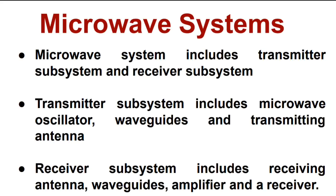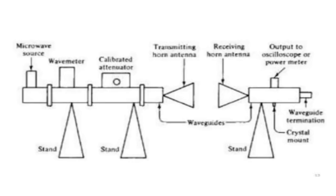The receiver and transmitter subsystems together form a microwave system. This is the diagrammatic representation of a microwave system. It has both transmitting and receiving subsystems. In this, we are using horn antennas for transmitting and receiving the signals. Waveguides are used to guide the microwaves from one place to another.